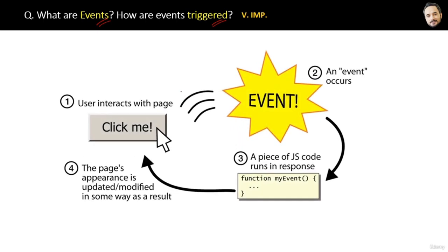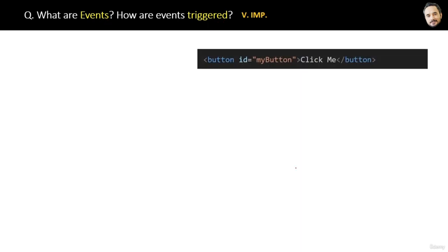What are events and how are events triggered? First, a user interacts with the page and clicks a button, then an event occurs that runs a piece of JavaScript code, which is mostly a function, and then the web page appearance is updated. That is the whole idea of the event.